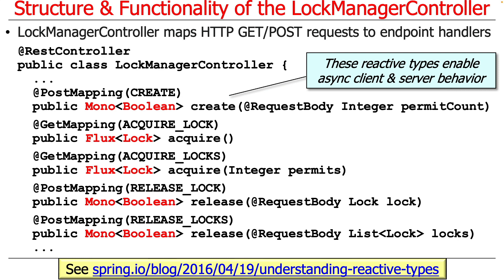When we create something, we get back a Mono to a Boolean. When we acquire a lock, we get back a Mono to a Lock. When we acquire multiple items, we get back a Flux to a Lock, because you could get multiple locks coming back. And when we release the locks, we get back a Mono to a Boolean. What this allows us to do is let the client and the server be fully asynchronous — there doesn't have to be any blocking involved. You just do the call, get back a Mono or a Flux, and go on your way until you actually need to get the values.